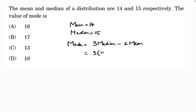Substituting the values: Mode = 3×15 − 2×14 = 45 − 28 = 17. So the correct option is B.